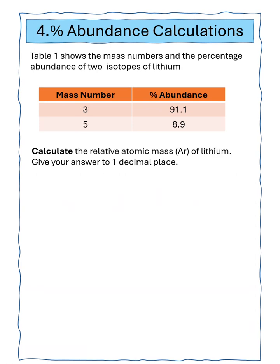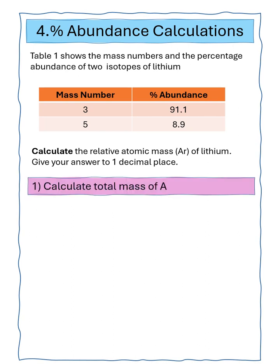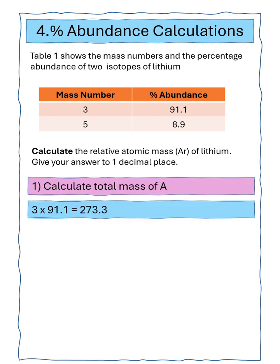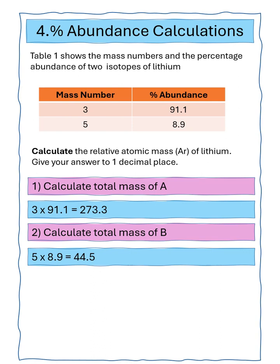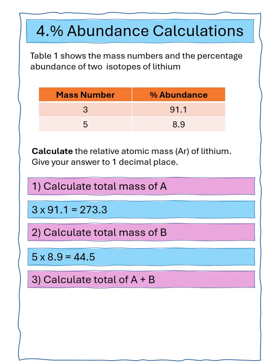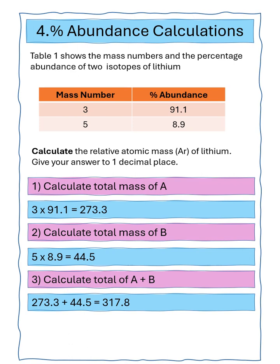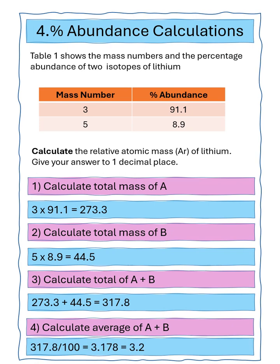Question four says table one shows the mass number and percentage abundance of two isotopes of lithium. We've got to calculate the relative atomic mass of lithium, giving the answer to one decimal place. Isotope A has a mass number of 3, abundance 91.1%, giving a total of 273.3. Isotope B has a mass number of 45, abundance 8.9%, giving a total of 44.5. Adding the two gives a total of 317.8. Dividing by 100% gives us 3.178, which is 3.2 to one decimal place.